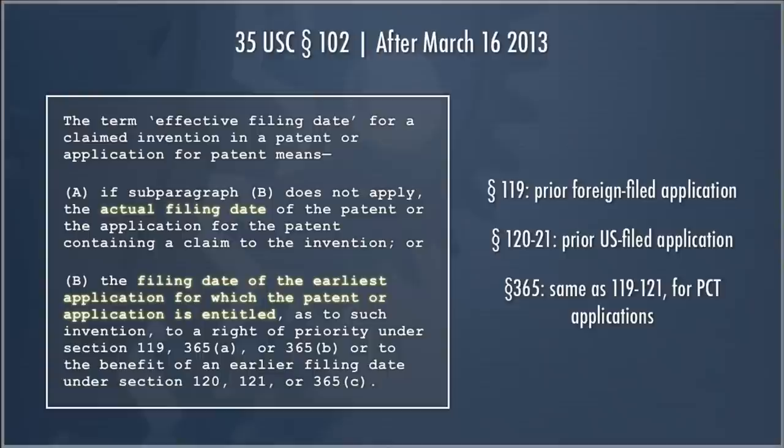Importantly, that earlier filed application must have enough disclosure in it to support the later filed application — you can't just pick a random earlier application. The disclosure must meet the Section 112 rules. Part B of the statute references the filing date as to a right of priority under Sections 119, 365, or an earlier filing date under Sections 120, 121, or 365. Section 119 deals with priority dates given to prior foreign-filed applications — if you file overseas, you can within one year file here and get the benefit of that earlier date.